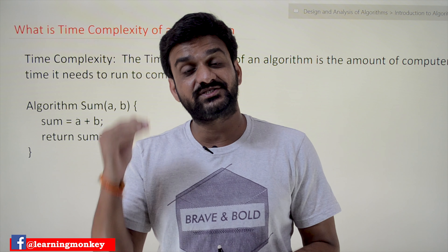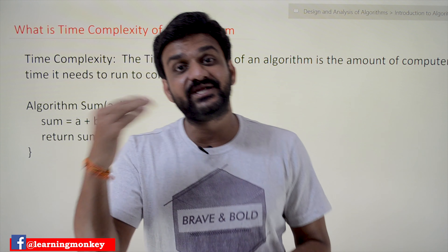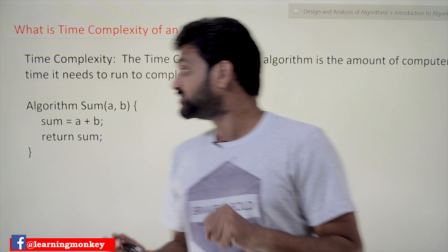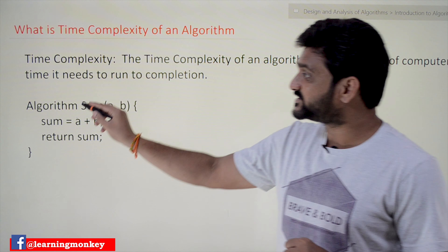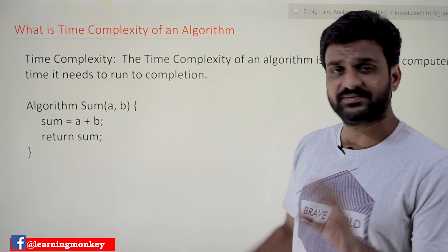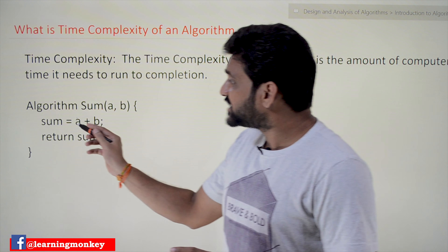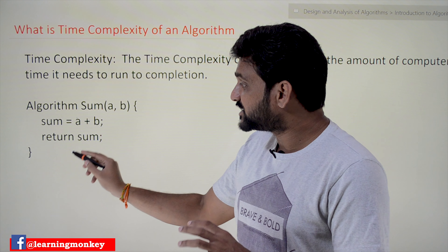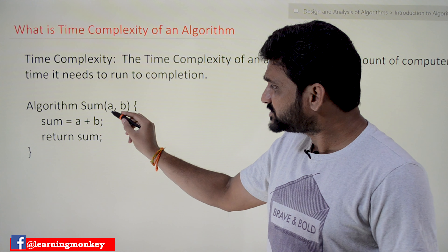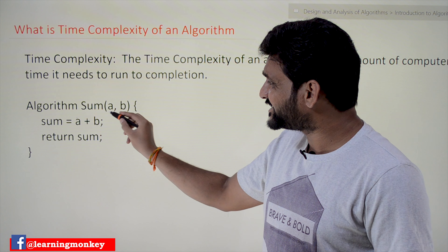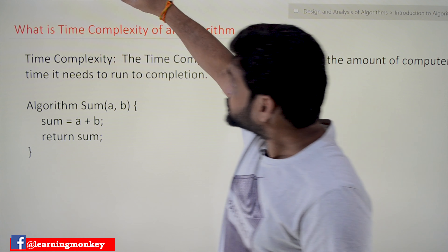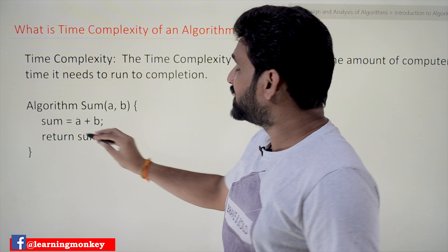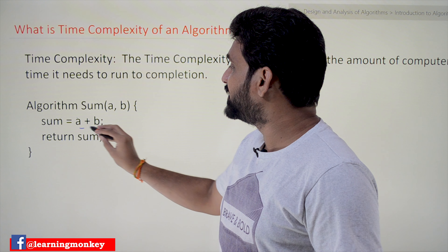Try to focus and watch this video as many times as possible until you get clarity. To understand this, let's consider an example. This is a simple algorithm. What this algorithm does is it considers two values, a and b, and it sums the values of a and b, storing the result in a variable called sum.